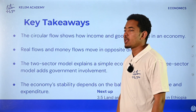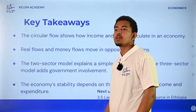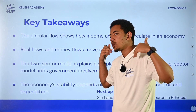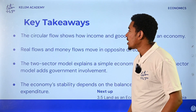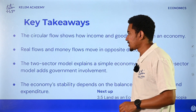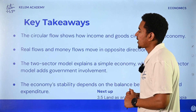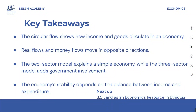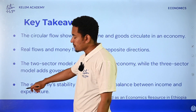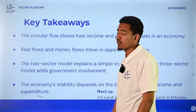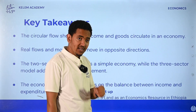The circular flow shows how income and goods circulate in an economy. Money flows can move in opposite directions. The two-sector model explains a simple economy, while the three-sector model adds government. The economy's stability depends on the balance between income and expenditure. The circular flow economic model - thank you very much.